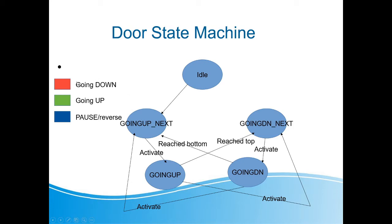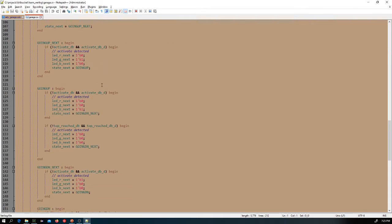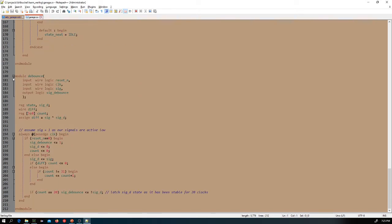For our demo we're using an Artix A7-35T board, readily available on Amazon for less than a hundred dollars. It has tricolor LEDs: red for going down, green for going up, and blue for pause. We've mapped the three inputs — activate, reach bottom, and reach top — to the buttons on that board.